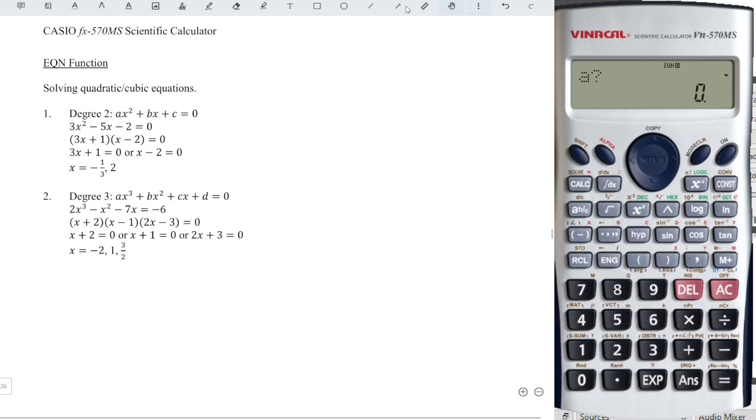A is the coefficient of x squared, so we have 3 and press equal. B is the coefficient of x which is negative 5, press equal. C is the constant of the equation and must be on the left, so which is minus 2.